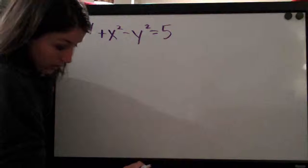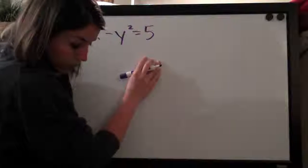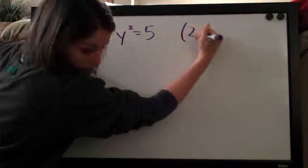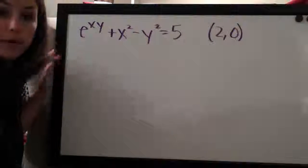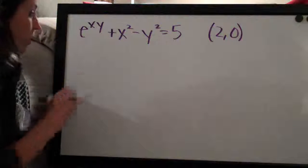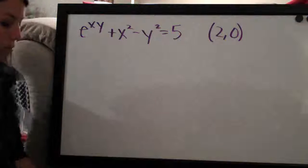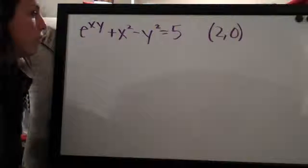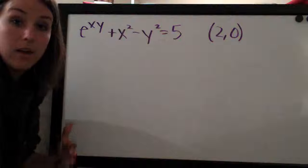They ask us to find the equation of the tangent line at the point (2, 0). When we're dealing with linear approximation and asked to find the tangent line with two variables x and y, normally with one variable we just take the derivative. In this case, since we have two variables, we have to take partial derivatives.